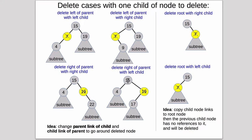What we're deleting is a right child of the parent and it has a left child. Then we have to set the right child of the parent of what we're deleting to point to the left child of the node we're deleting, and then set the left child's parent pointer to point to the parent of the node we're deleting. Delete the root with a right child — in this case all we have to do is change the root to point to the child. And delete the root with a left child — we just make the root point to the child, so we don't have to update anything else.